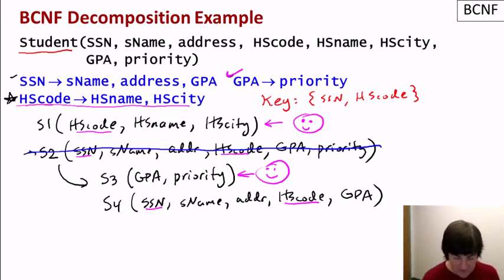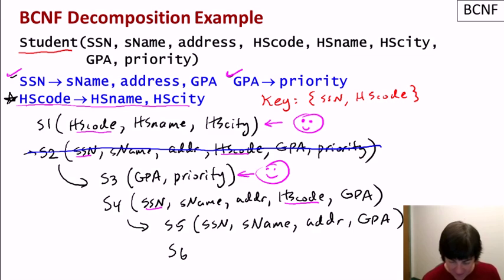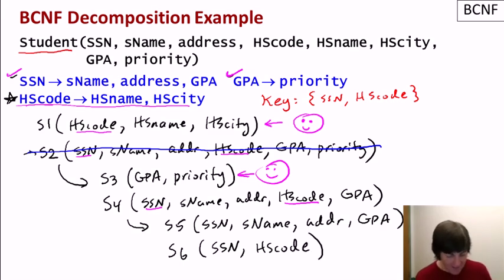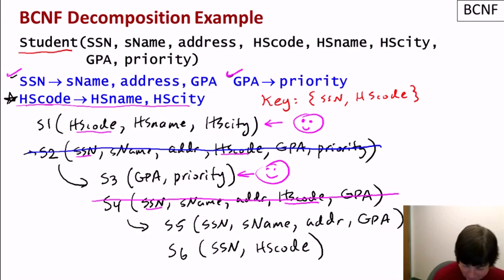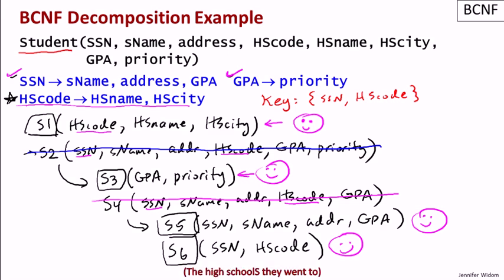S4 still has SSN and high school code as its key, so SSN → name, address, GPA is still a violating functional dependency. Decompose S4 into S5 (SSN, name, address, GPA) and S6 (SSN, high school code). Both S5 and S6 are now in BCNF. Our final schema contains four relations: S1 (high school information), S3 (GPA and priority), S5 (student with name, address, GPA), and S6 (student with high school). This is produced automatically by the BCNF decomposition algorithm.